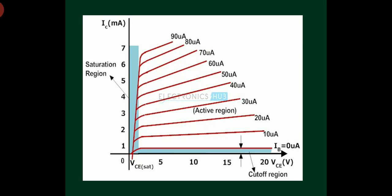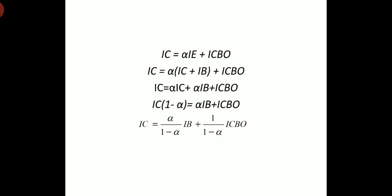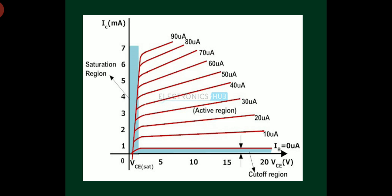Even if IB equals 0, IC = [1/(1−α)]·ICBo, so we still get a small collector current. There are three regions in the output characteristics graph: saturation region, active region, and cutoff region. We are most interested in using the transistor in the active region in order to use it as an amplifier. This is about common emitter configuration. Thank you.